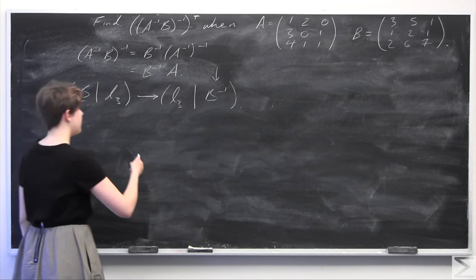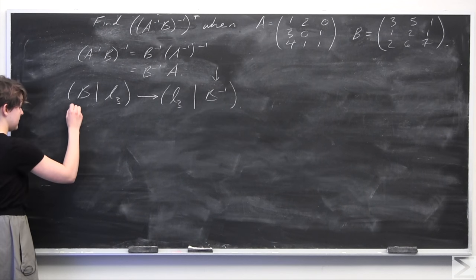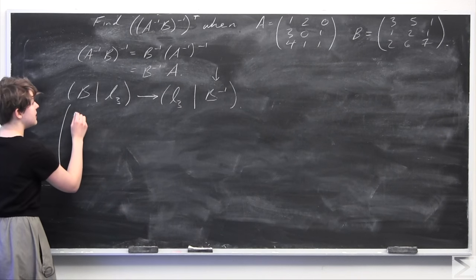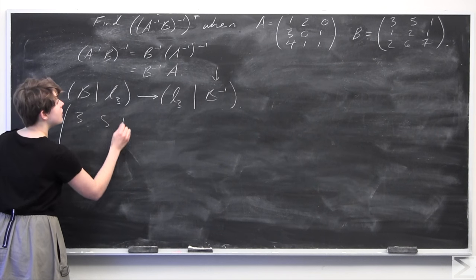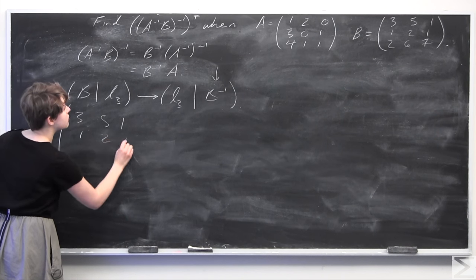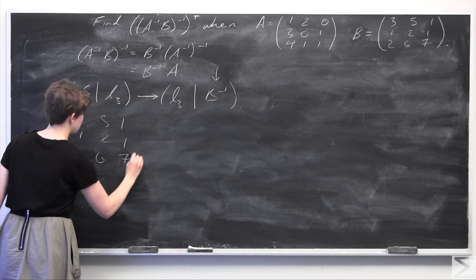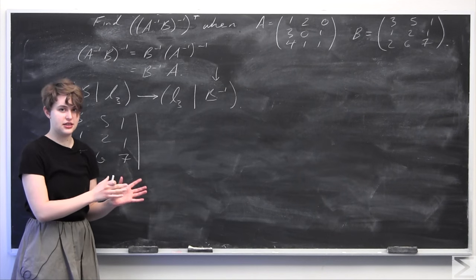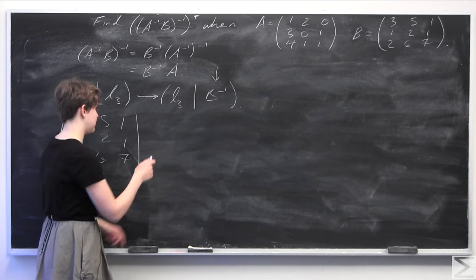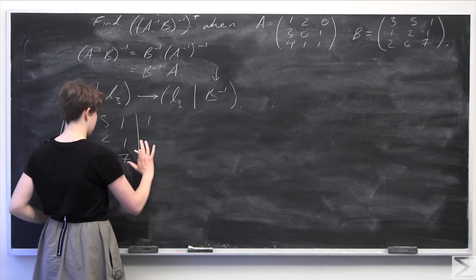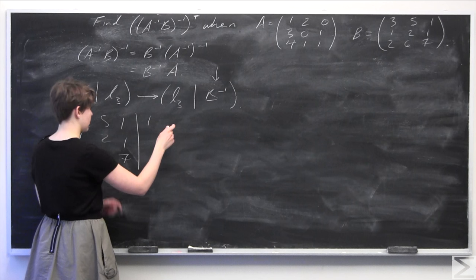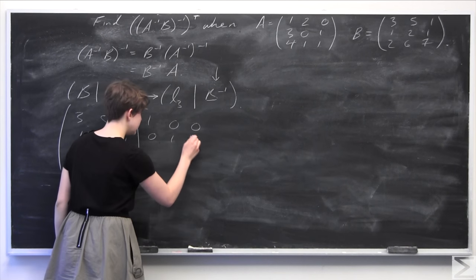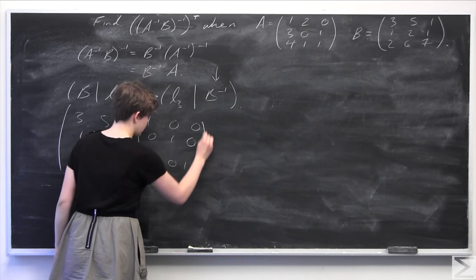We set up the augmented matrix as follows: B on the left-hand side — 3, 5, 1 / 1, 2, 1 / 2, 6, 7 — and the 3×3 identity matrix on the right-hand side. I'll draw a bar to delineate between the matrix we're inverting and the identity matrix.